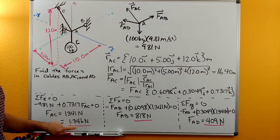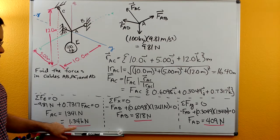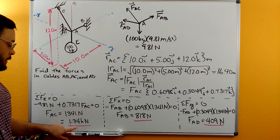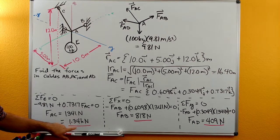and then rounding off to three significant figures and then also converting to kilonewtons because the number's larger than a thousand. We get 1.34 kilonewtons for FAC.